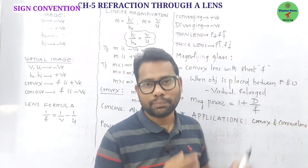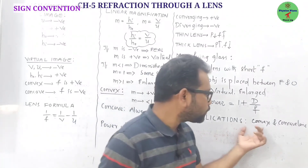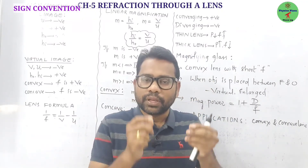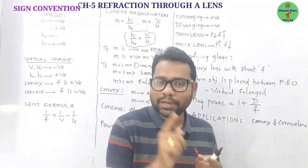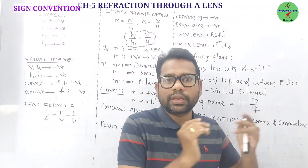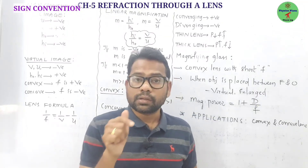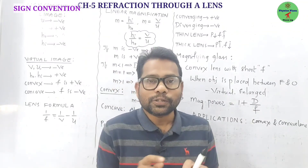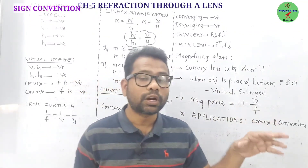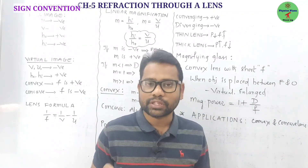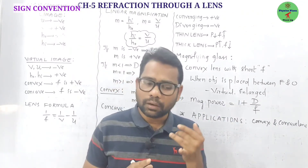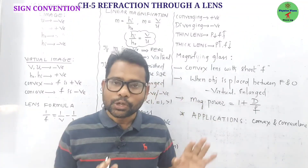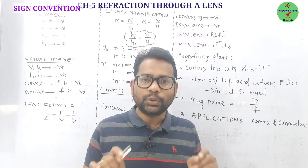Applications of a convex lens include: burning glass, camera lens, terrestrial telescope, slide projectors, spectroscopy, simple microscope, and correcting hypermetropia. Applications of a concave lens include: Galilean telescope and correcting myopia.